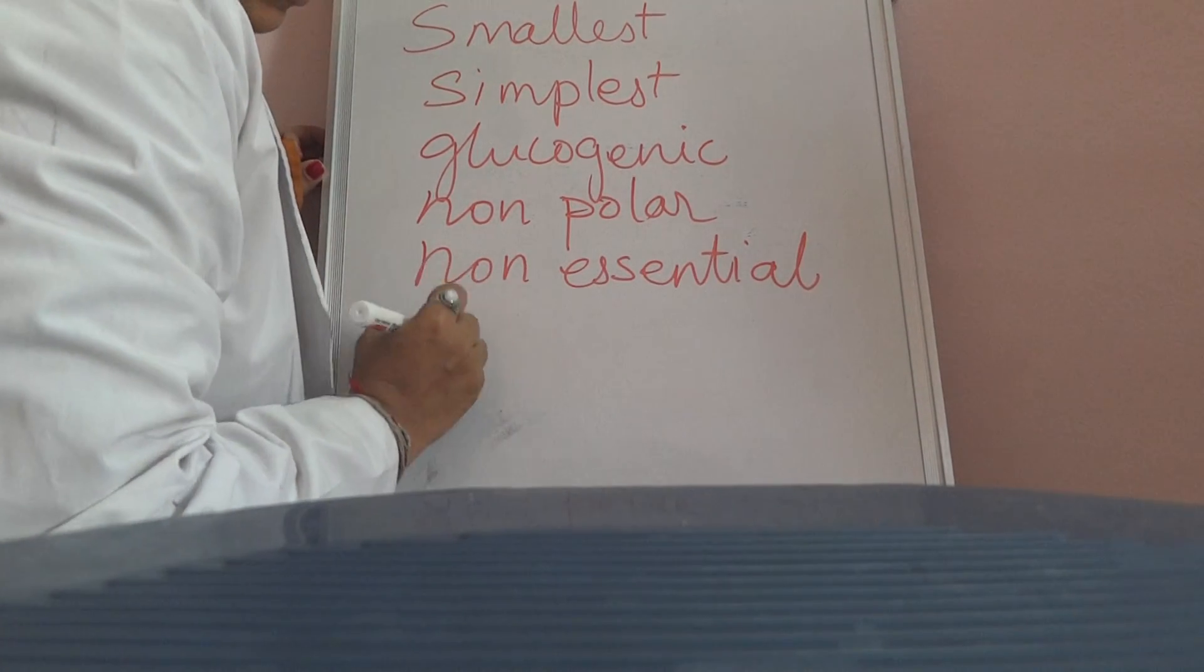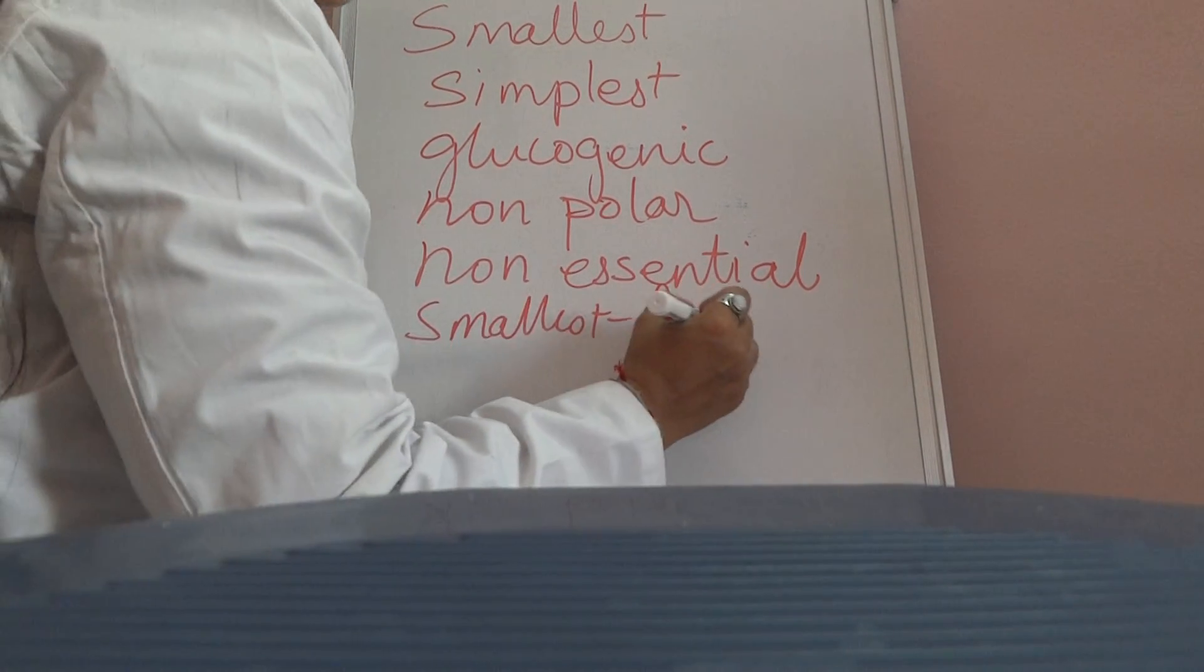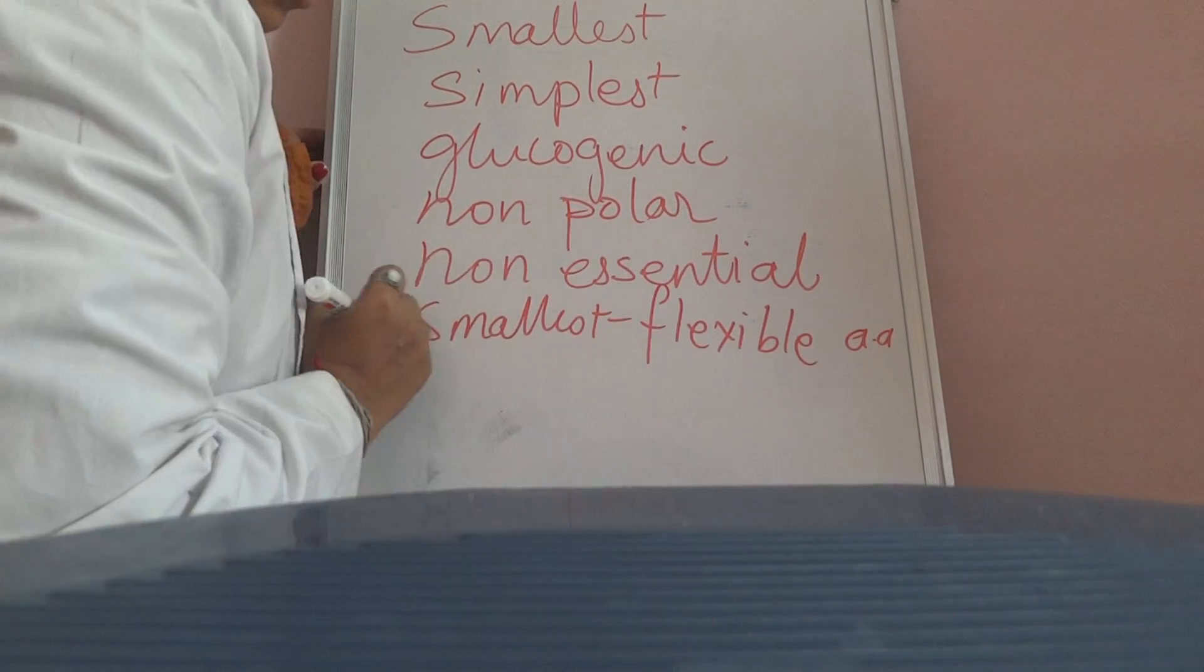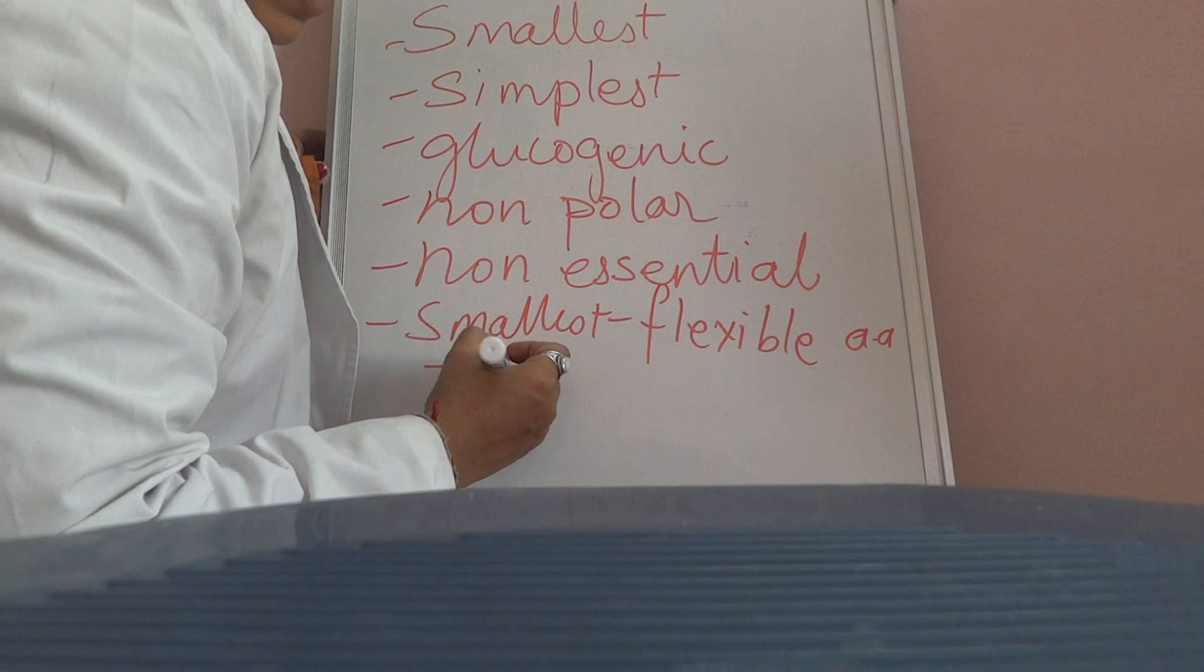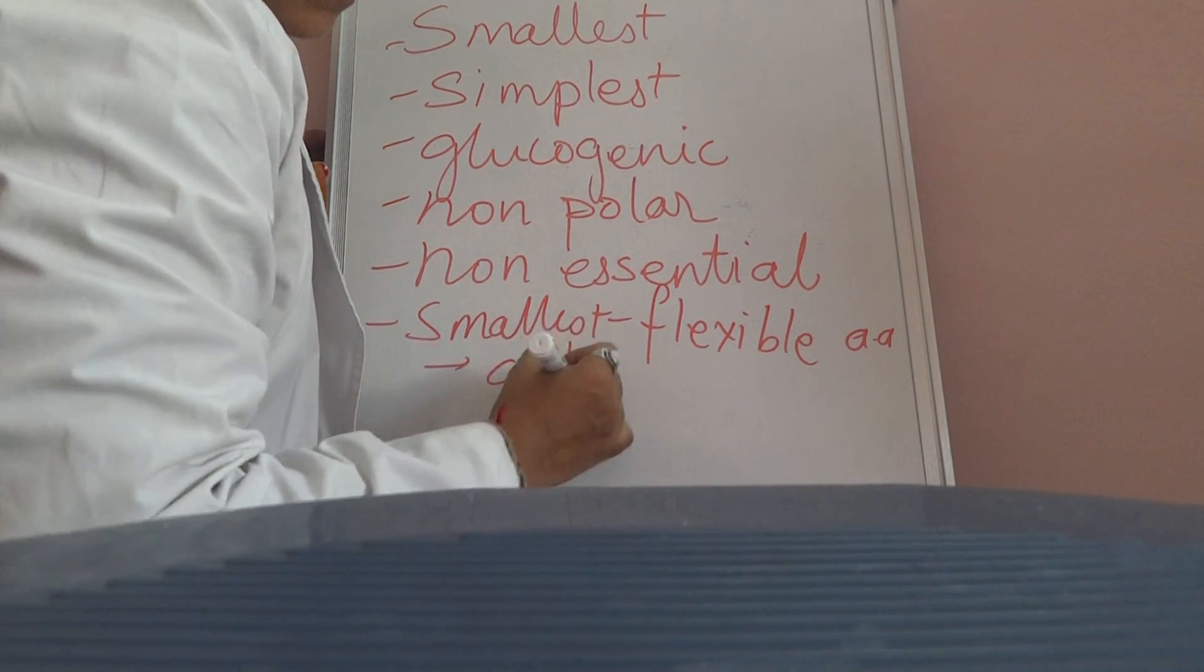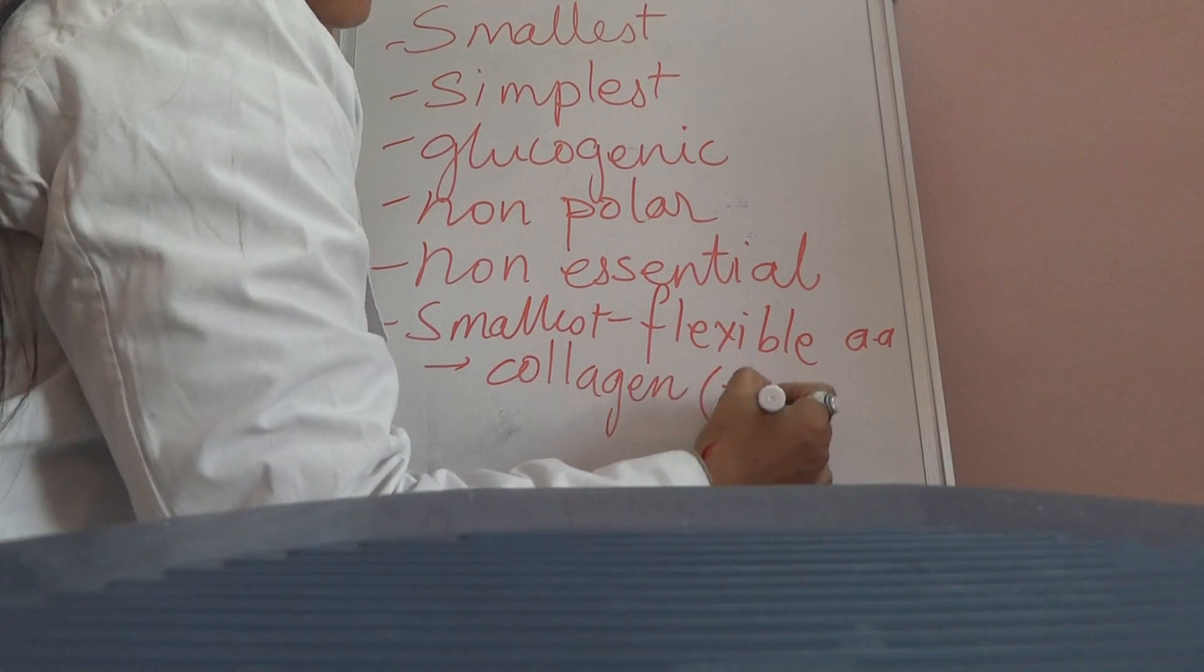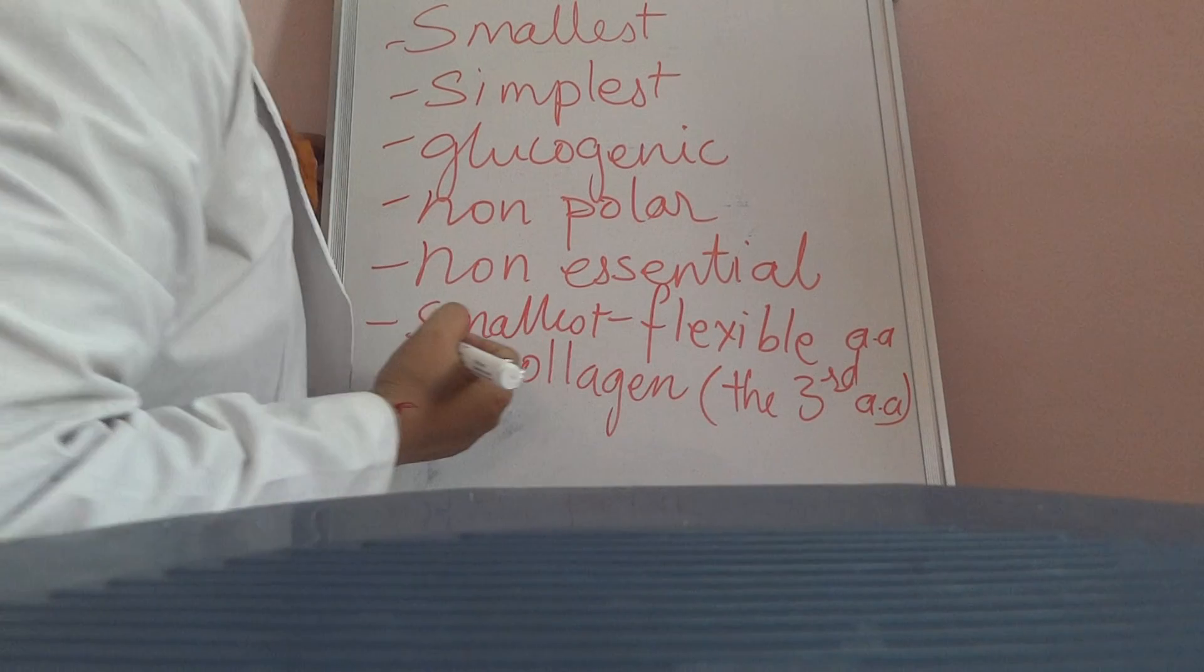Because it is smallest, it is the most flexible amino acid and that is why it is present in collagen. The third amino acid always is Glycine.